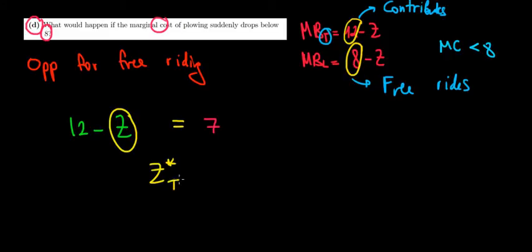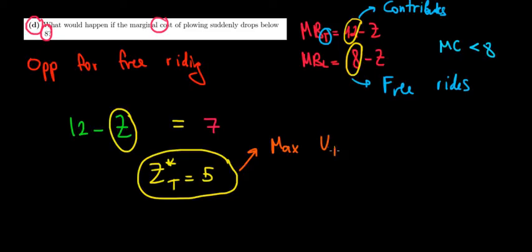What would be the optimal amount of snow plowing that Thelma will do? Well, the optimal amount of snow plowing for Thelma will be equal to five. And this is a public good. Now remember, this would maximize the utility of Thelma. So this is maximizing the utility of Thelma.